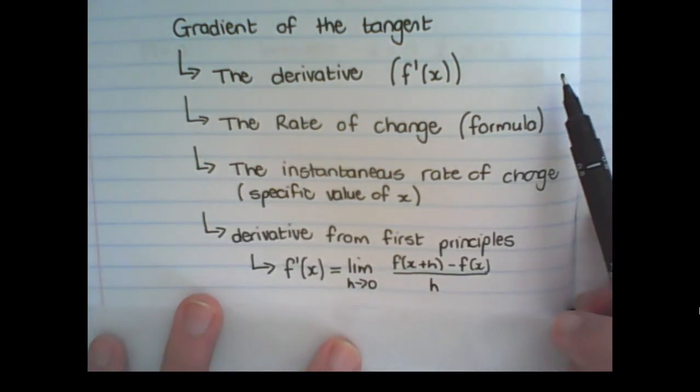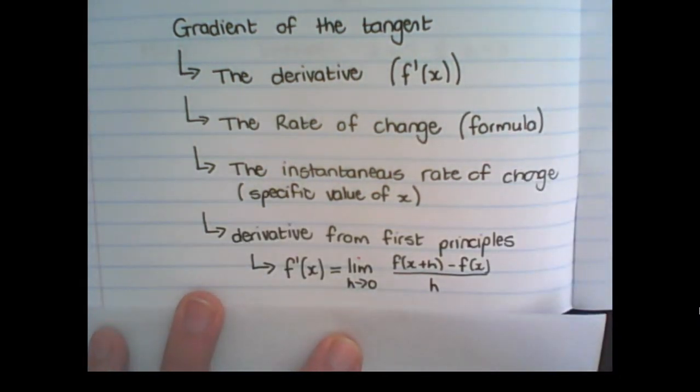And what we did in the example today is we found the derivative, meaning the gradient of the tangent, from first principles. So it's f prime x. And this is formula for derivative, making the distance between point a and b smaller and smaller, moving closer and closer to zero.